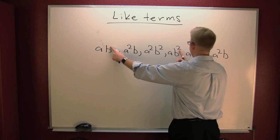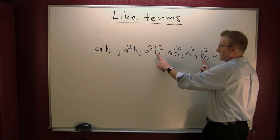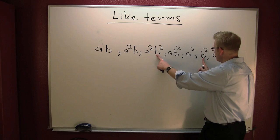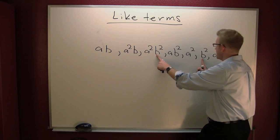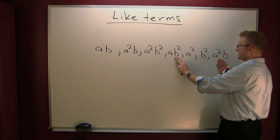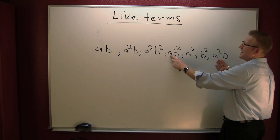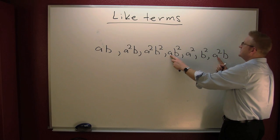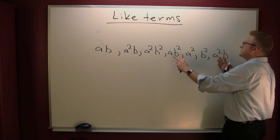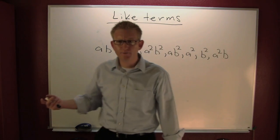Here b's to the second and there b to the second — are these the same terms? They're not like terms because this one's missing the a component entirely. What about these? One has a squared and the other doesn't — here a is to the first degree and here a is to the second degree. So these are not like terms. I'm starting to think none of these are alike. Are any of them alike?